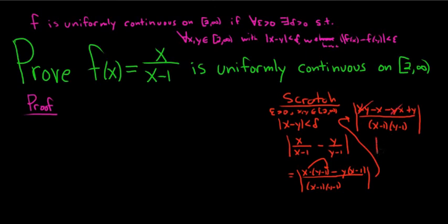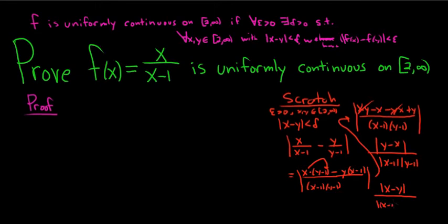Then we distribute. We get the absolute value of xy minus x, minus yx plus y, all over x minus 1 times y minus 1. The xy terms cancel, which is good. So we get the absolute value of y minus x over the absolute value of x minus 1 times y minus 1. You can rewrite y minus x as x minus y — the distance between y and x is the same as the distance between x and y.